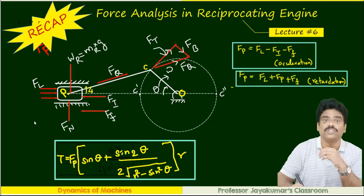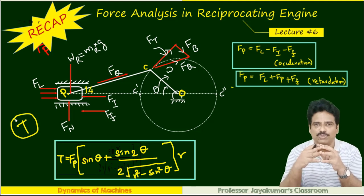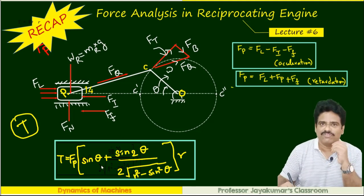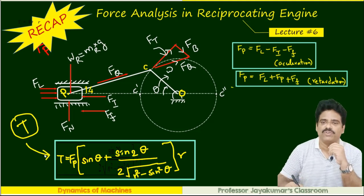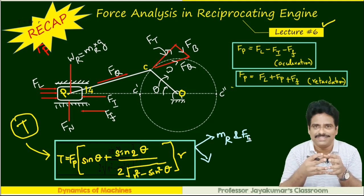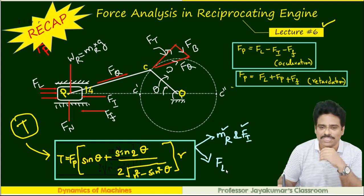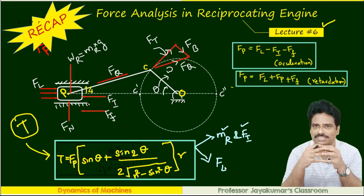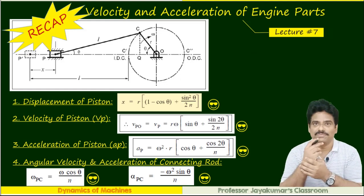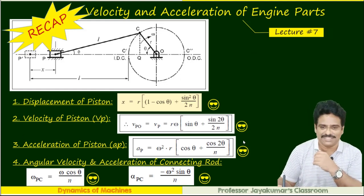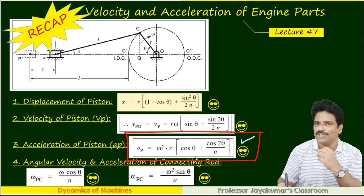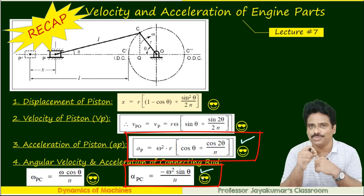The most important component for us is the turning moment or torque acting on the crankshaft. This is the formula obtained in lecture number 6. This torque on the crankshaft is contributed by mass of the reciprocating parts and its associated inertia force, as well as the gas pressure — the net load acting on the piston. While solving this problem, we need two formulas: acceleration of the piston and acceleration of the connecting rod.